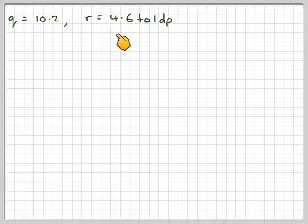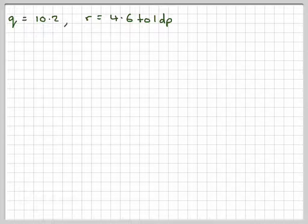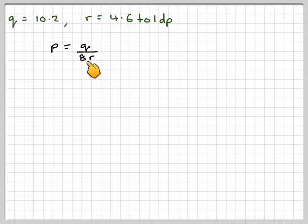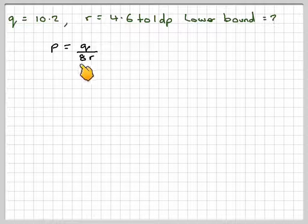So we've got Q = 10.2, R = 4.6 to 1 decimal place, and P = Q / (8R). We need to find the lower bound of P.